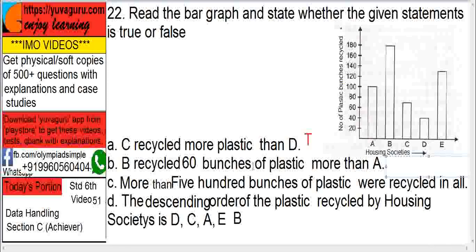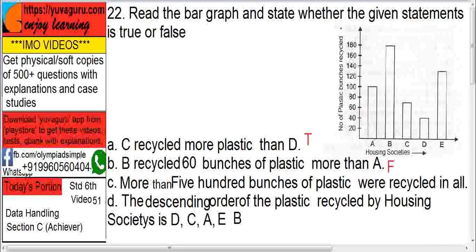Statement C: More than 500 bunches of plastic were recycled in all. Let's see the total: 100, 180, then 70, then 40, and then 130. If you total all this it comes out to be 520, so C is true.